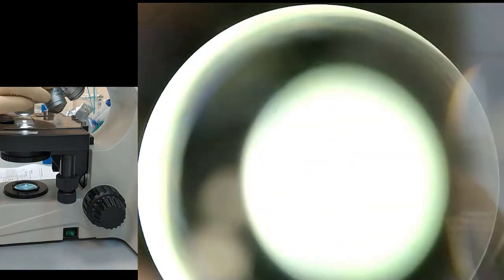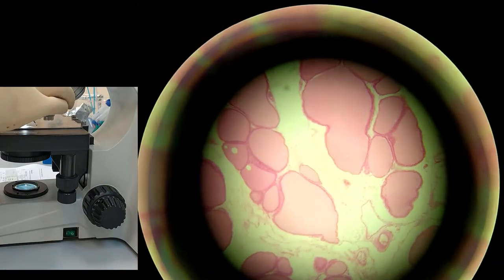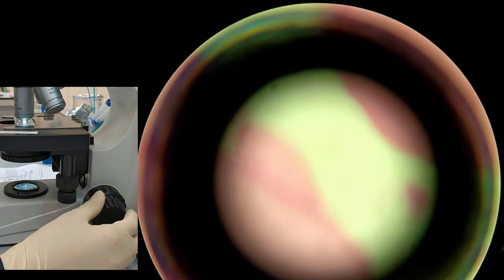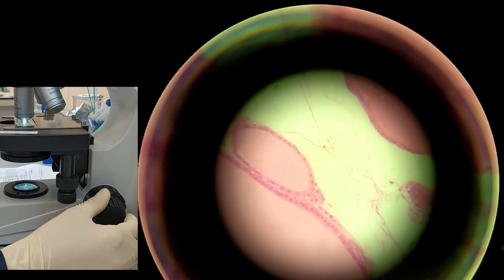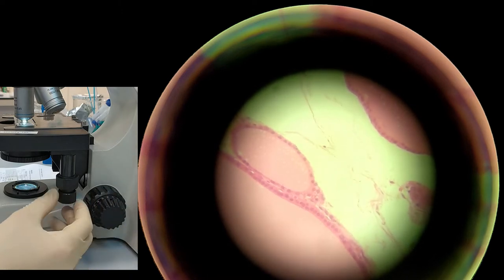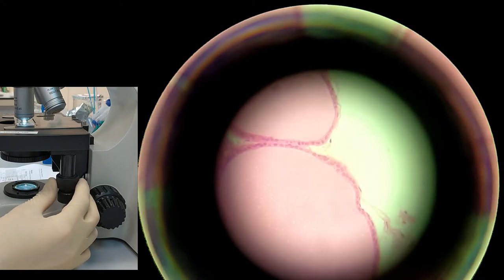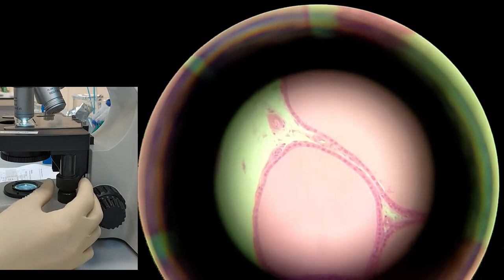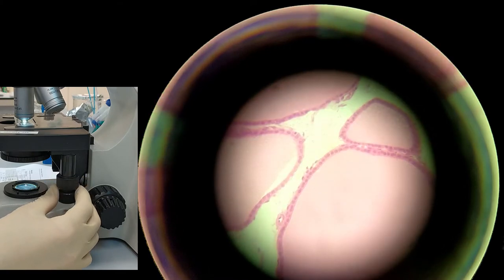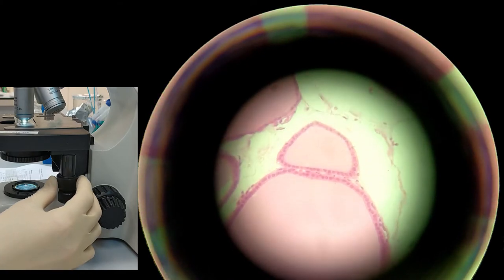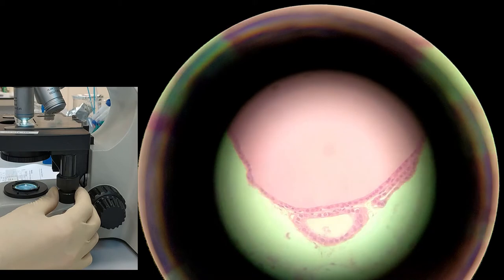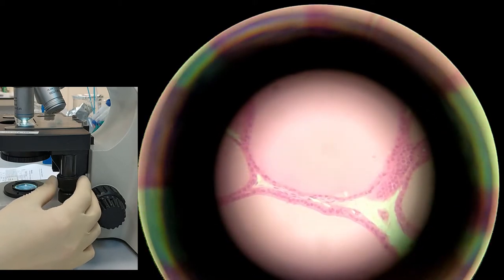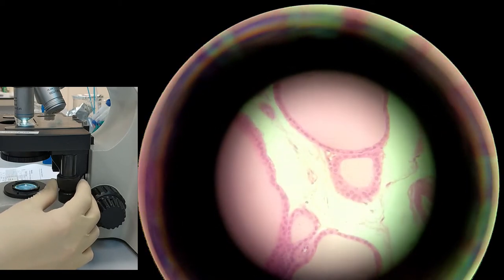Now we can switch to 10x or 40x to see the details. Here you can see that these big voids, they are actually surrounded by epithelial tissue, and it is called cuboidal because every cell here is cubic. Again when you find the best view you can start drawing it.